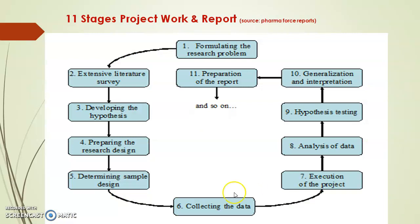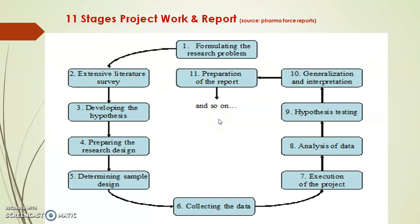There are 11 stages of project work. Stage 1: formulating a research problem. Stage 2: extensive literature survey and developing a hypothesis. Stage 3: preparing the research design. Stage 4: determining sample design. Stage 5: collecting the data. Stage 6: execution of the project — that is the most important. Stage 7: analysis of data. Stage 8: hypothesis testing. Stage 9: generalization and interpretation. Stages 1 to 6 are the work of Semester 7, while stages 7 to 11 — preparation of the report and finally publication and outcome — are part of Semester 8.